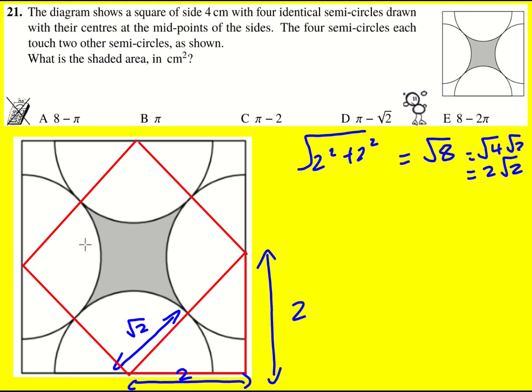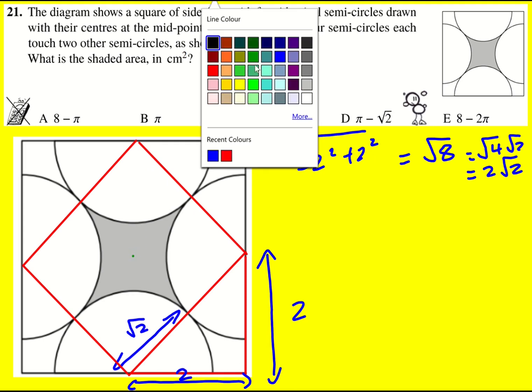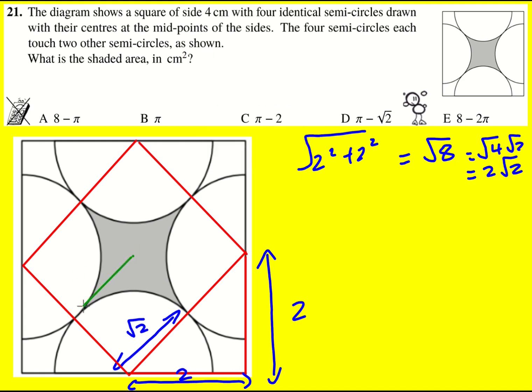This helps sort of start seeing how we might be able to calculate this shaded area, because one thing I've not yet drawn is the center of the square, and there's symmetry going on here. So if we just focus on basically this bit here.